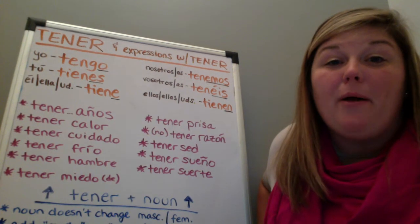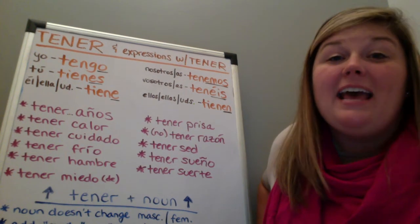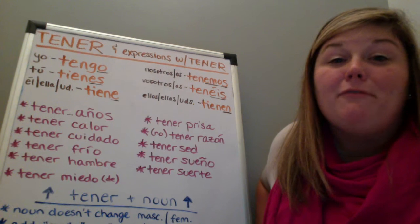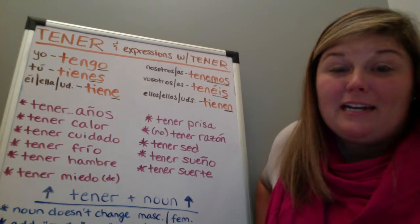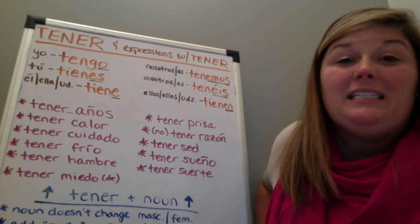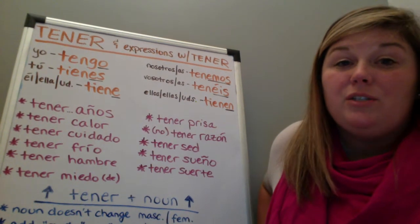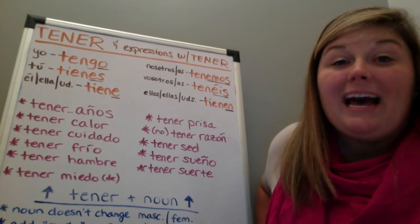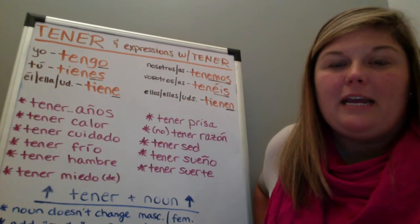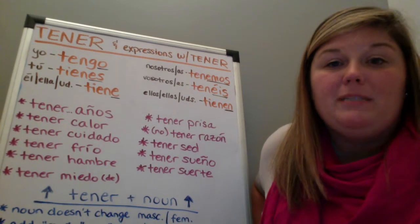Today we're going to talk about the verbs tener and venir, but first we're going to talk about the verb tener. Tener means to have, and the first thing we're going to do is go over the conjugations of the verb tener, meaning all the different forms of the verb tener.